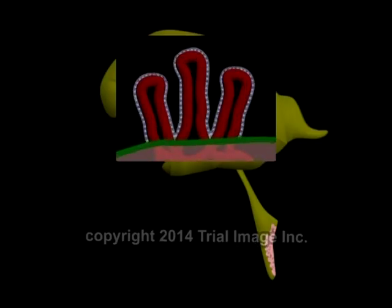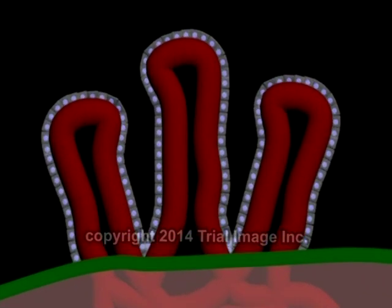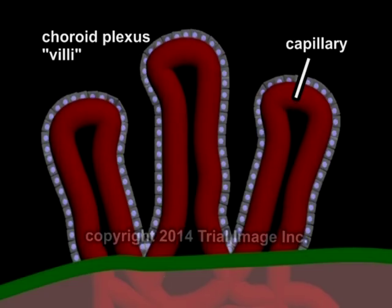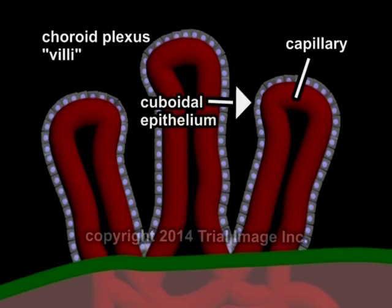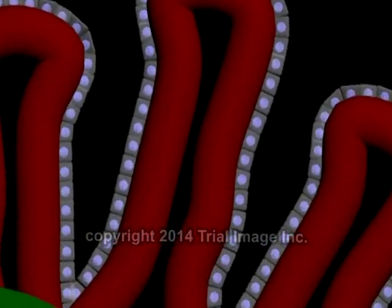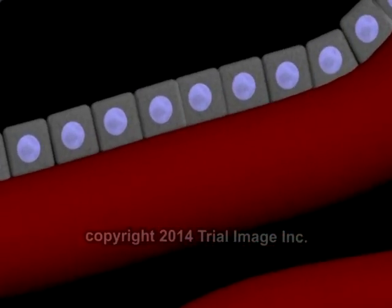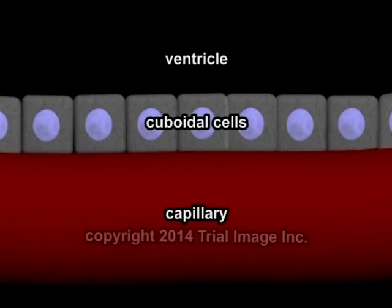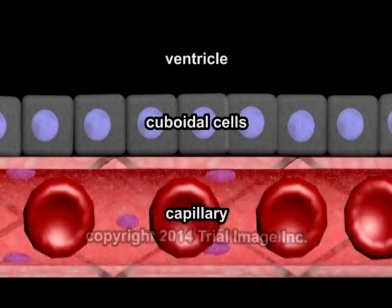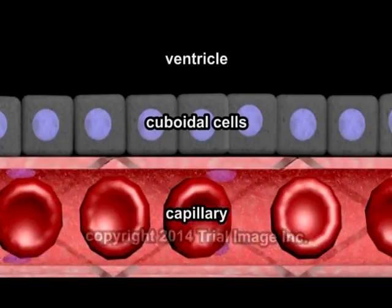The functional unit of the choroid plexus is known as a villus, or multiple villi. The villus consists of loops of tiny capillaries separated from the ventricle by a layer of cuboidal epithelial cells. Here, in a close-up view, we see the layer of cuboidal epithelial cells interposed between the capillary and the ventricle.